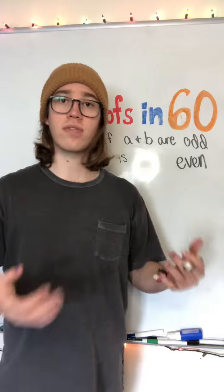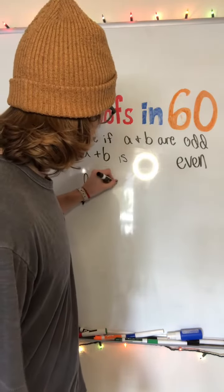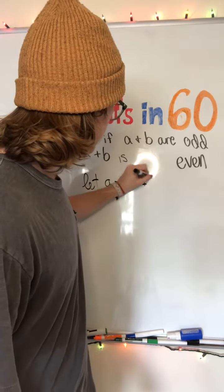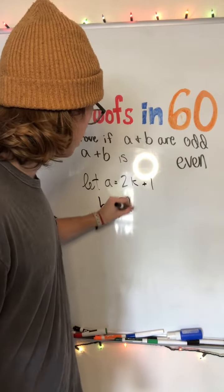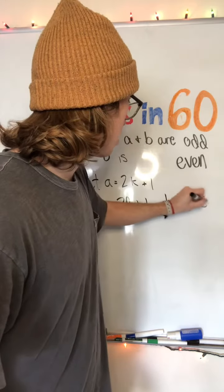Well, A and B being odd means they're from the integers, so we're gonna let A equal 2K plus 1 and B equal 2L plus 1, where K and L are in Z.